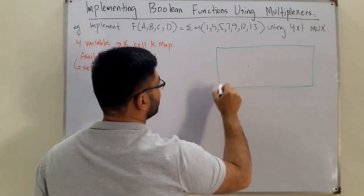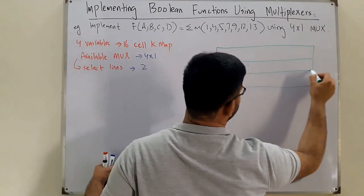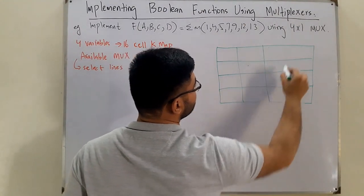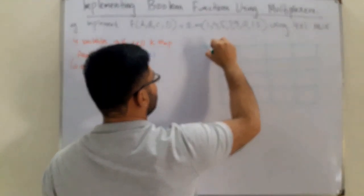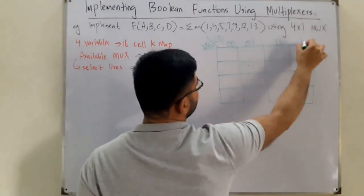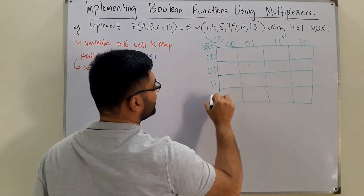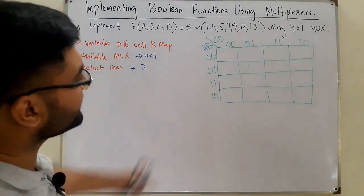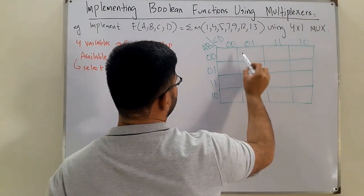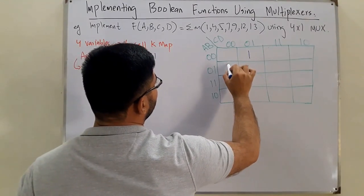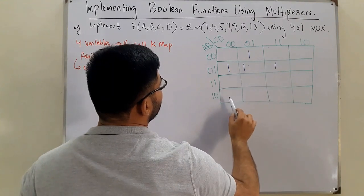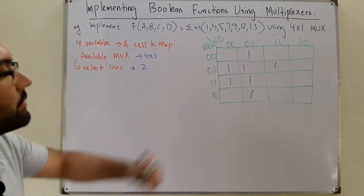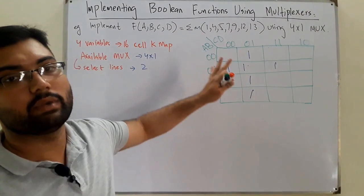The K-map has four rows and four columns. On one side we have AB and on the other we have CD, with values 00, 01, 11, 10. The minterms 1, 4, 5, 7, 9, 12, and 13 are marked as ones; the rest are zeros.